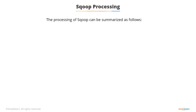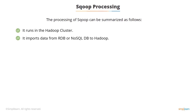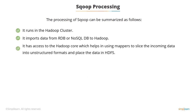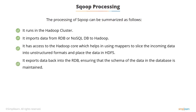Following is a summary of Sqoop processing. It runs in a Hadoop cluster. It imports data from the RDB or NoSQL DB to Hadoop. It has access to the Hadoop core, which helps in using mappers to slice the incoming data into unstructured formats and place the data in HDFS. It exports data back into RDB, ensuring that the schema of the data in the database is maintained.